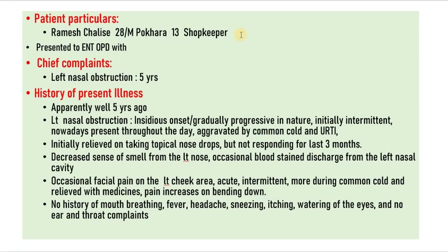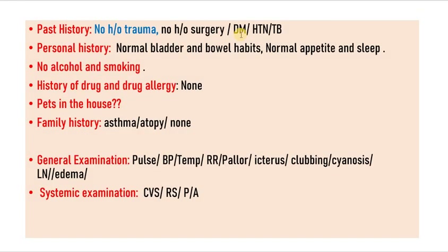If you have been given a case of allergic rhinitis or sinusitis, then you have to take history about the orbit also — patient itching of the eyes, double vision, or difficulty in vision. In the past history, there is no history of trauma, which is very important, as trauma may also lead to DNS. There is no history of surgery in the past; surgery of the cleft palate may lead to some form of nasal deviation. History of diabetes mellitus, hypertension, and tuberculosis are taken. Tuberculosis may lead to facial deformity or nasal deformity that may lead to nasal obstruction.